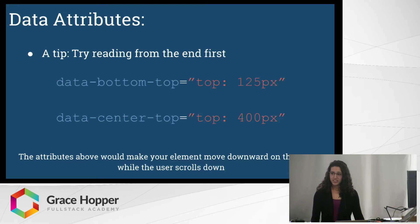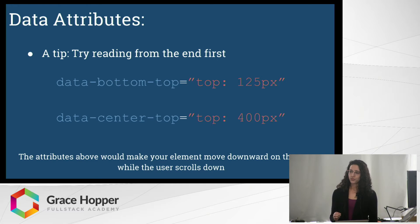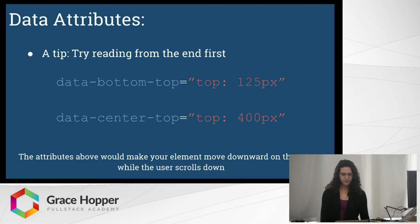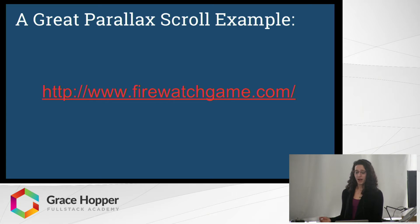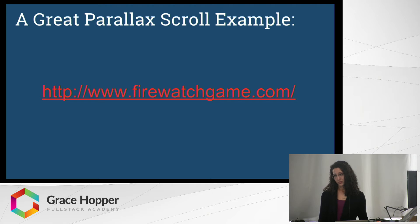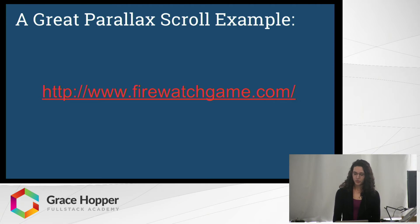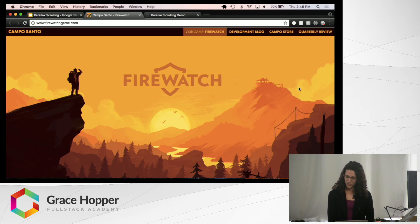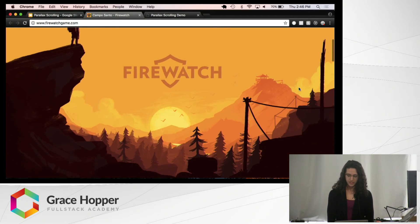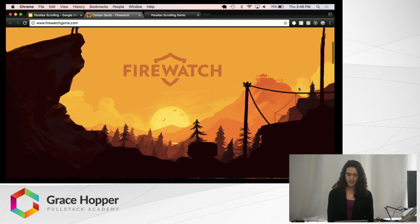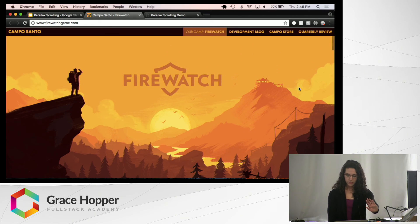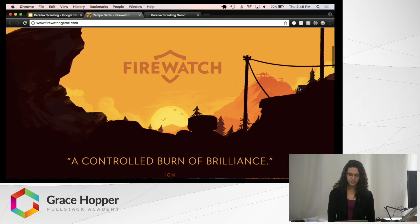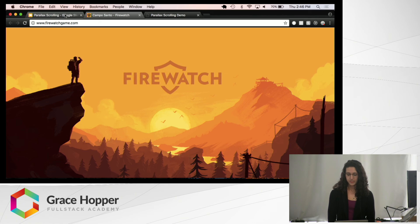Now if we put both of these attributes together on the same element, we would see that while the user is scrolling downward, this element would also be scrolling downward. That's really as easy as it is to implement parallax scrolling — it's mostly data attributes and CSS properties, which we already know. This next example uses nine layers in its parallax scrolling features, so it really creates an illusion of three dimensions — you can almost reach into the screen. It's a video game called Firewatch. You can see here that when we scroll, these nine layers are moving at different speeds to make it appear like there is a background with far mountains and a foreground right in front of us. That was an excellent example of parallax scrolling.